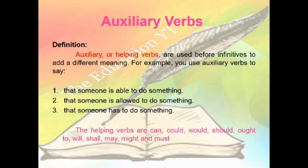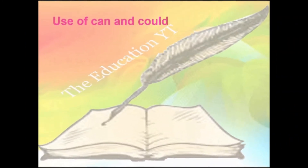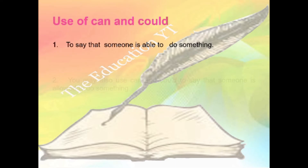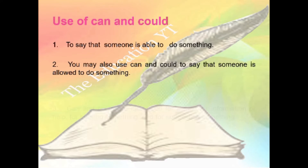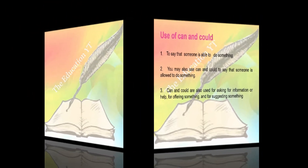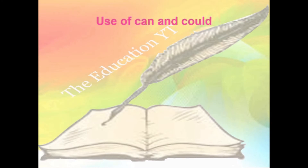First, we learn the use of can and could. Number one: to say that someone is able to do something. Number two: you may also use can and could to say that someone is allowed to do something. Number three: can and could are also used for asking for information or help, for offering something, and for making a suggestion.